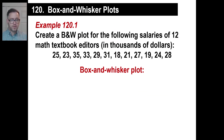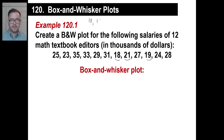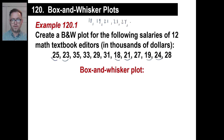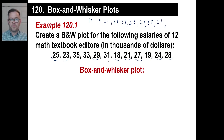Let's try another one. Create a box and whisker plot for the following salaries of 12 math textbook editors in thousands of dollars. Let's go ahead and create it. First off, let's put this thing in order. It looks like we've got 18, 19, and then 21. Then we've got 23, 24, and 25 — that's six of them. Then we have 27, 28, and 29. And then 31, 33, and 35.